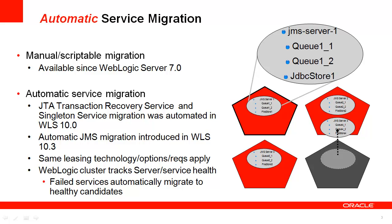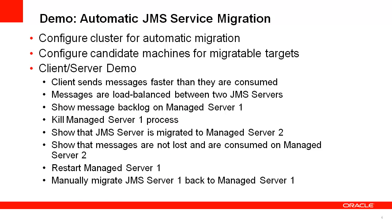However, using consensus leasing requires that you use NodeManager to control all the servers within the cluster. Following this overview, I will walk you through the configuration for setting up automatic service migration for JMS using database leasing. I will start by configuring a cluster for database leasing and then configuring migratable services by setting user preferred and candidate services. I will also show the table structure for database leasing and discuss how to configure this. Then I will show a live demo of JMS server migration.